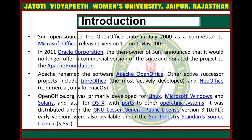It could also read a wide variety of other file formats from Microsoft Office. OpenOffice.org released version 1.0 on 1 May 2002. In 2011, Oracle Corporation, the owner of Sun, announced that it would no longer offer a commercial version of the suite and donated the project to the Apache Foundation. Apache renamed the software Apache OpenOffice, and other active successor projects include LibreOffice, and NeoOffice, commercial only for Mac operating system.